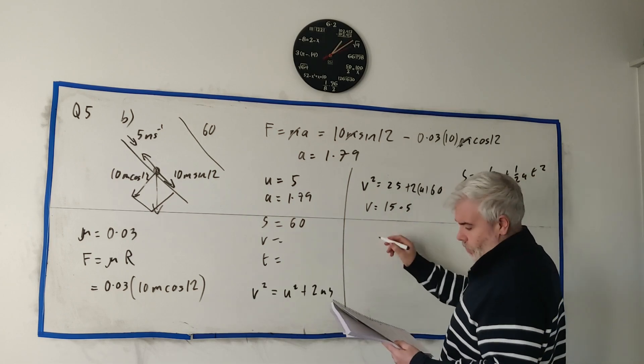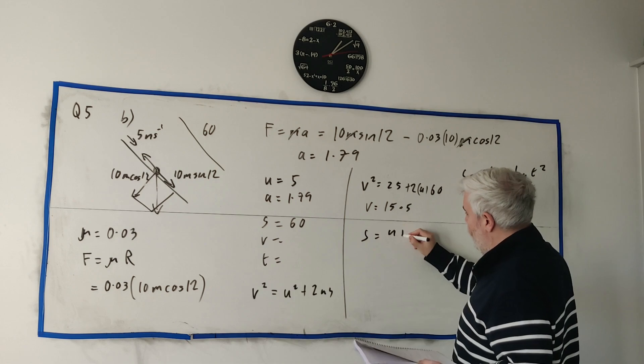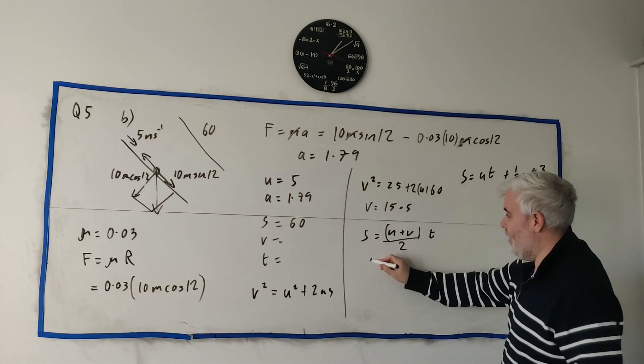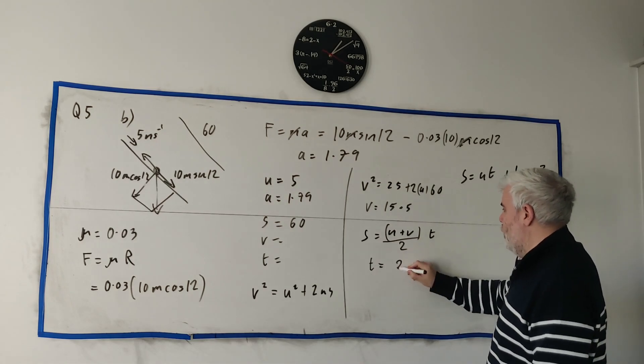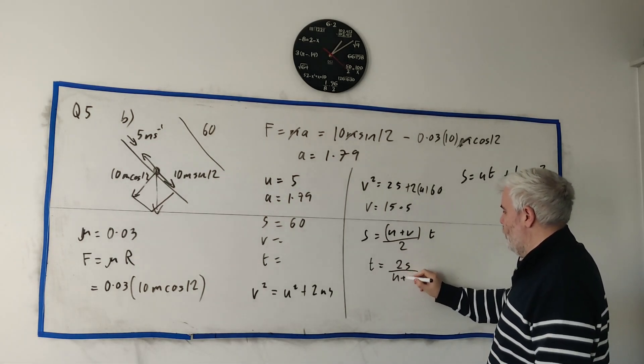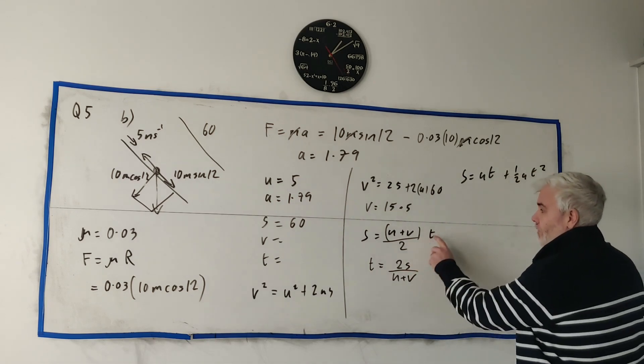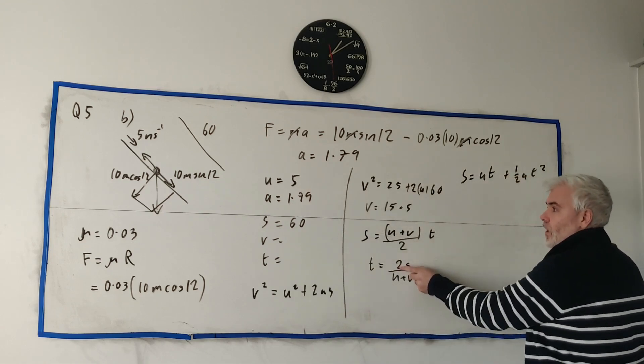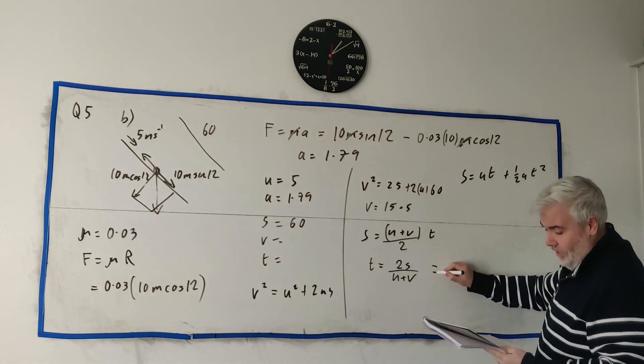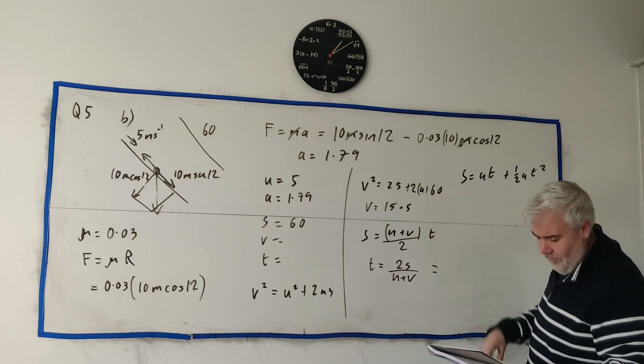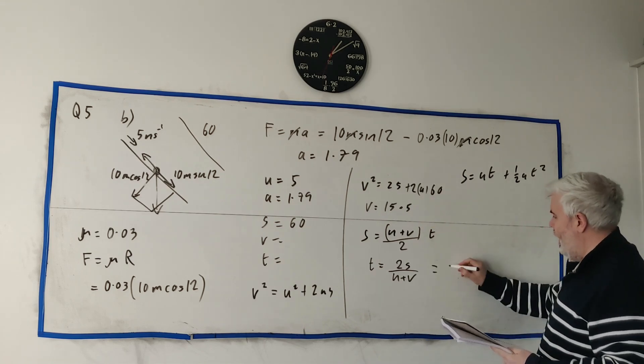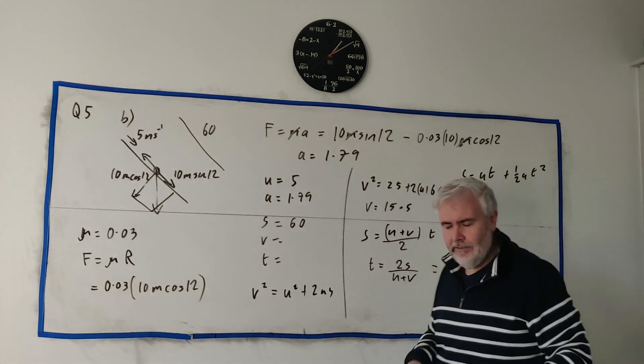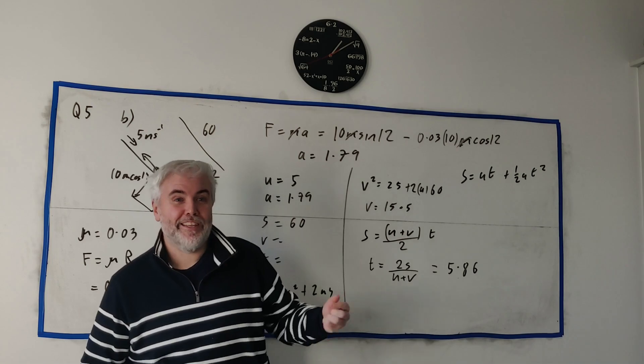And then I'd use s is equal u plus v over 2 times t. Rearrange that, you get t is equal 2s over u plus v. We have all these numbers. We have a v here on your calculator. U is just 5. That's 120 on the top. Put it all into your calculator using your exact number. Don't round off too early. And I get 5.86. That's rounded off. You round off at the end, never in the middle. That would be a small bit of advice.